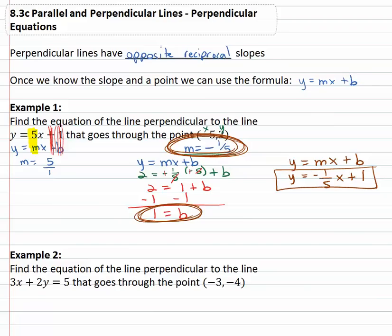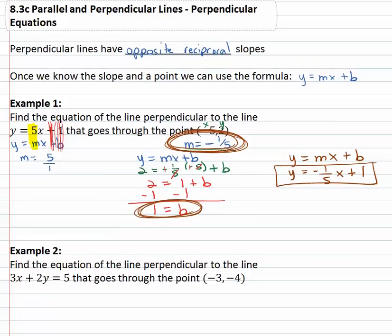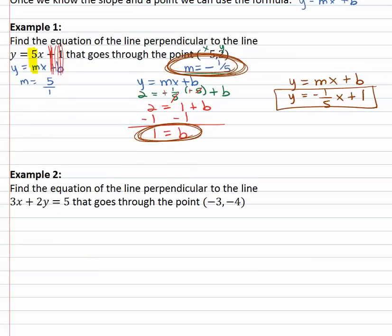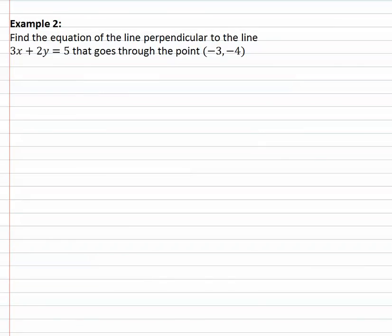This is the equation that is perpendicular to y equals 5x plus 1 and goes through the point negative 5 comma 2. Let's try another example: find the equation of the line perpendicular to 3x plus 2y equals 5 that also goes through the point negative 3 comma 4.